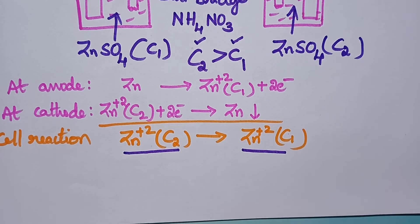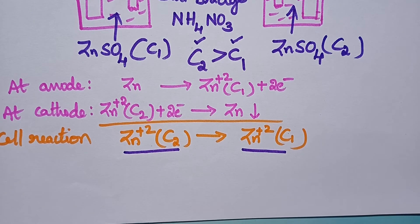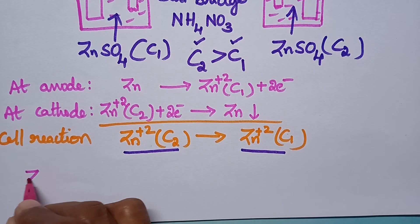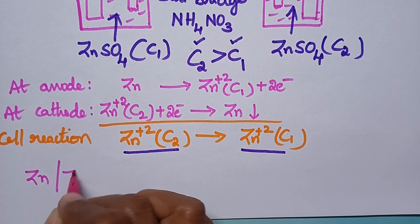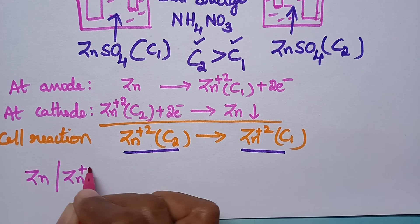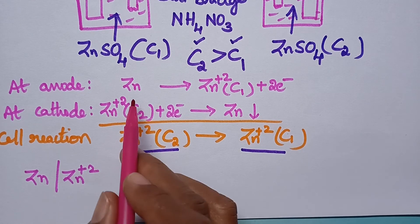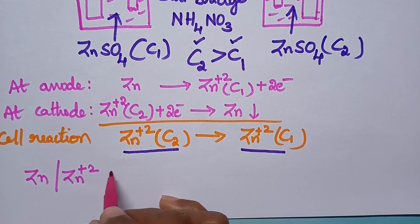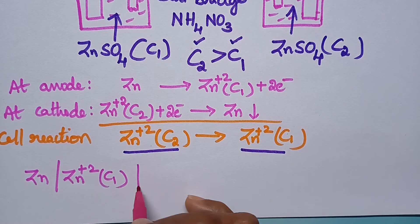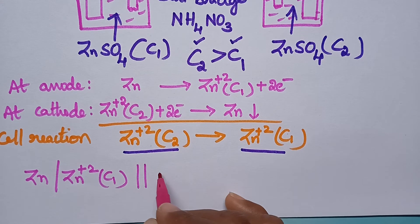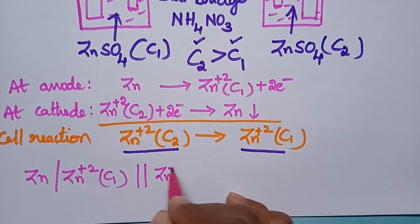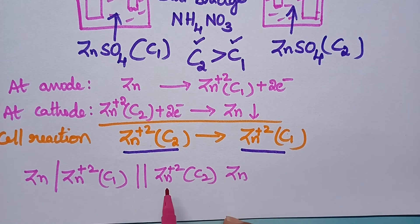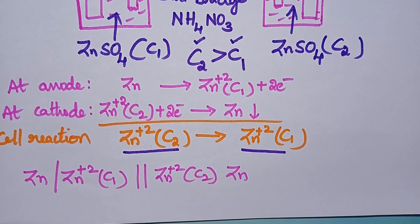In a simple way, this concentration cell can be represented as the anode half-reaction followed by the cathode half-reaction. At the anode, zinc is undergoing oxidation. At the cathode, Zn²⁺ ions are undergoing reduction. This is called the cell representation.